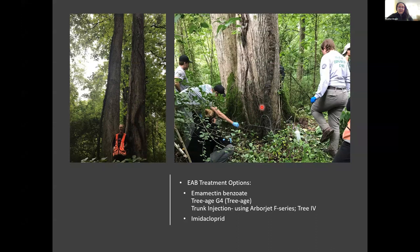These treatments are done when trees are uptaking the majority of their water for the season — typically April, May, June, and if not too hot, the first couple weeks of July. We actually retreated a champion pumpkin ash in Caroline County this past year — you can see the bases are together, so it's one tree. In addition, there are other chemicals that can treat EAB. Imidacloprid is a neonicotinoid used as a soil drench, but that product is no longer available to the general public — you need a licensed pesticide applicator. Imidacloprid treatments are typically good for one year, whereas emamectin benzoate is good for three to five years depending on your level of EAB.